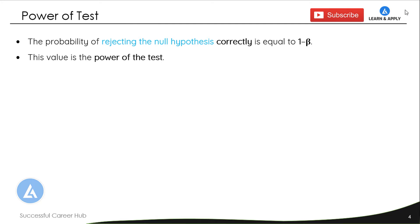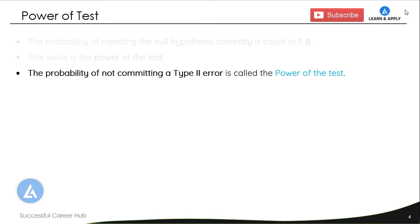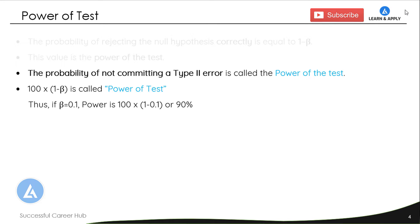The probability of rejecting the null hypothesis correctly is equal to 1 minus beta. This value of 1 minus beta is called the power of the test. Here, beta is the consumer risk, also called a Type 2 error. So we can say the probability of not committing a Type 2 error is the power of the test. For example, if beta equals 0.1, then the power of the test will be 100 × (1 − 0.1) = 90%.